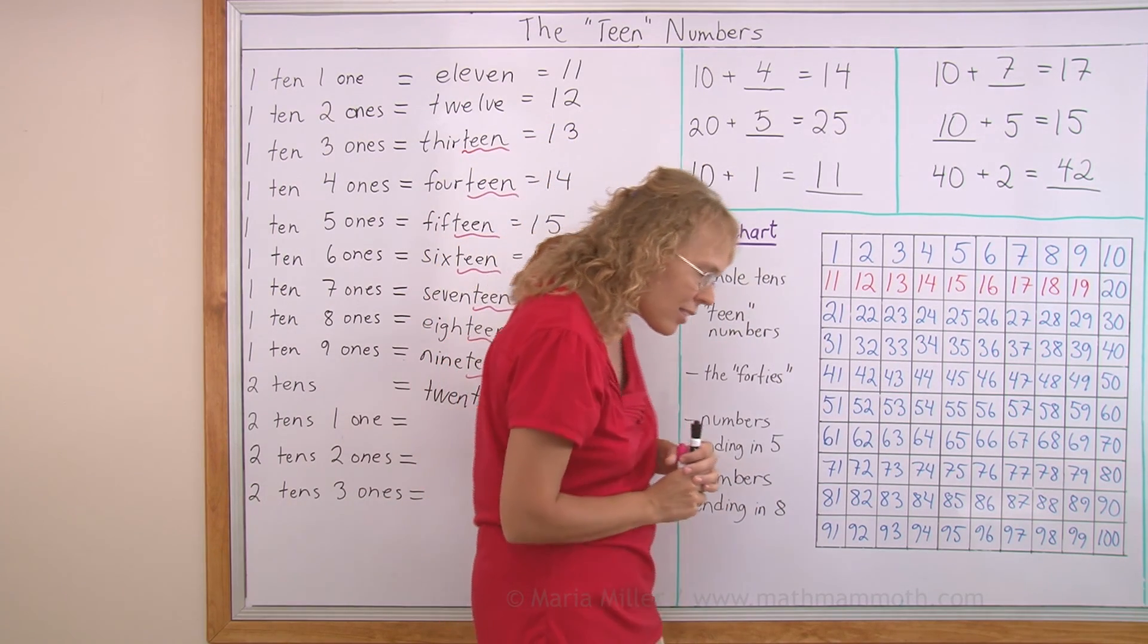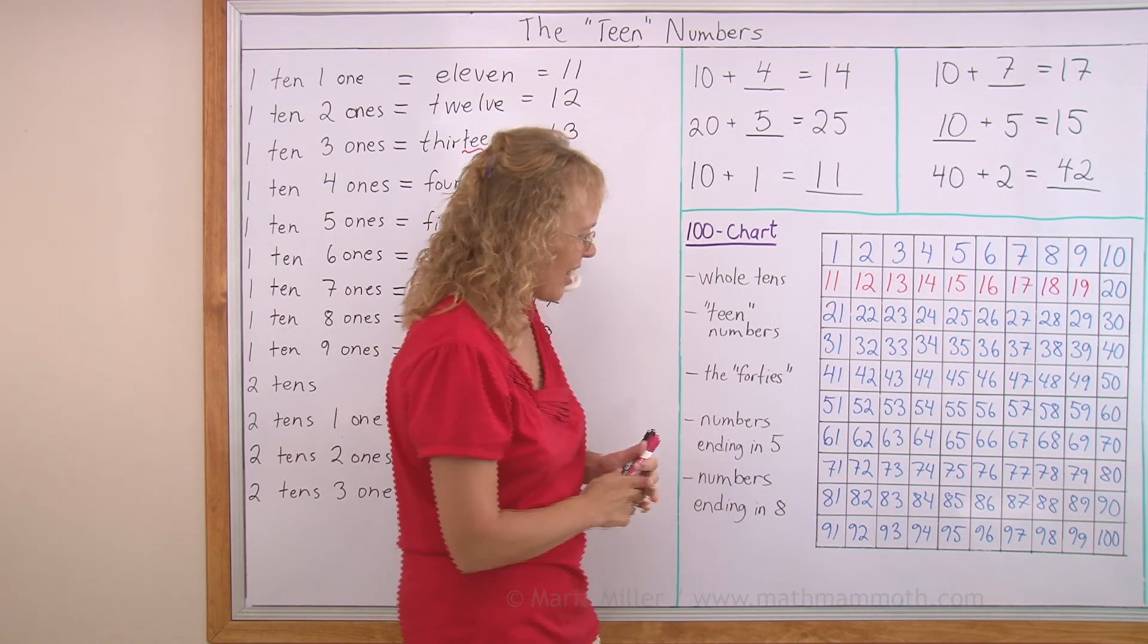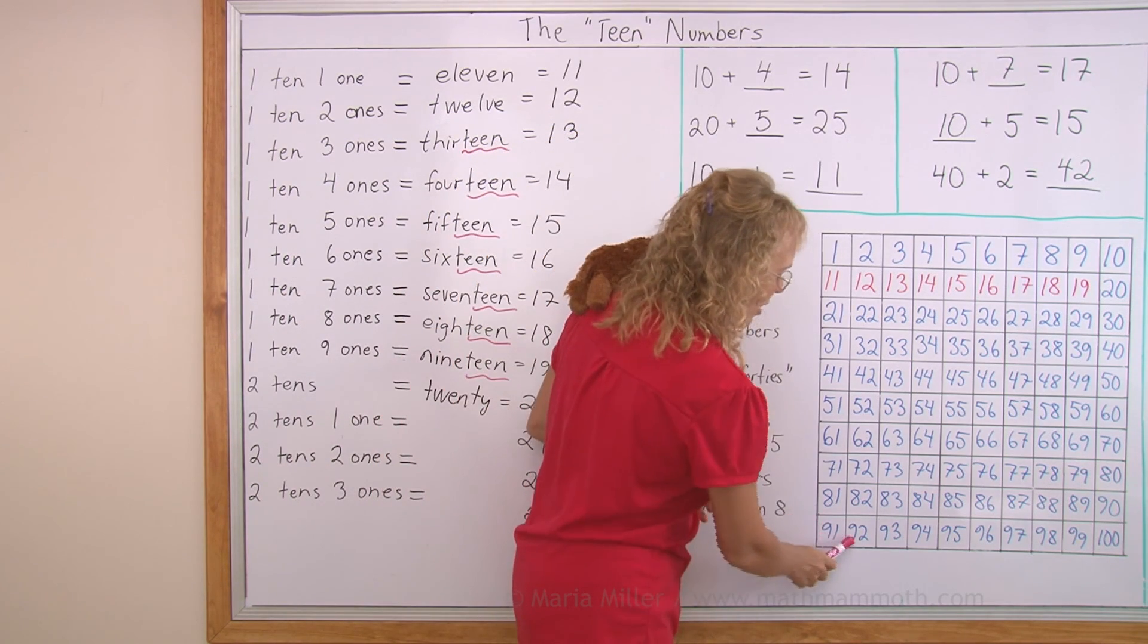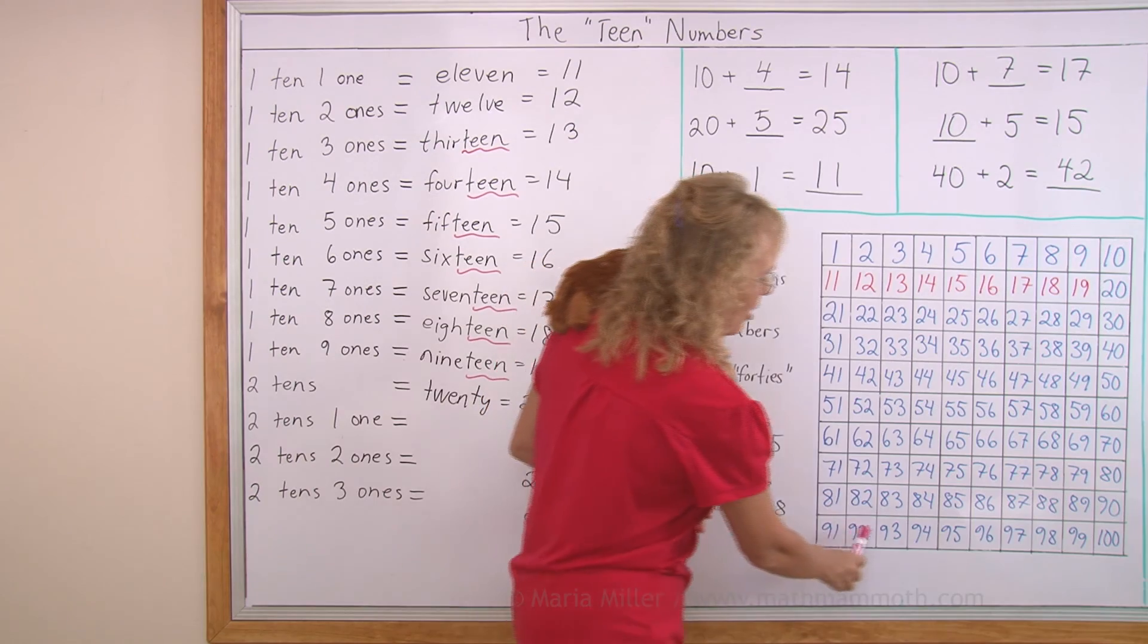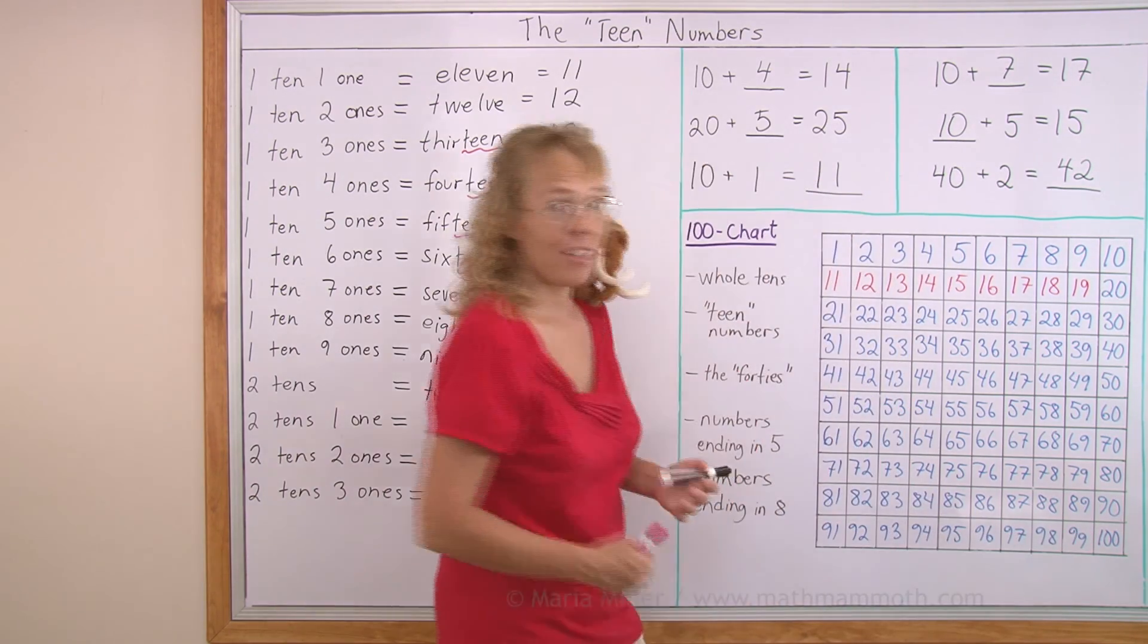What's that, Matthew? Ah, find also the 90s. The 90s are here: 91, 92, 93, and so on. All of these are 90 something except 100. Okay, they are also in their own row.